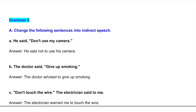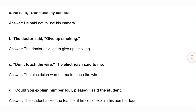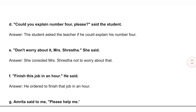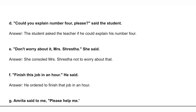Grammar: Change the following sentences into indirect speech. A: He said, 'Don't use my camera.' Answer: He said not to use his camera. B: The doctor said, 'Give up smoking.' Answer: The doctor advised to give up smoking. C: 'Don't touch the wire,' the electrician said to me. Answer: The electrician warned me not to touch the wire. D: 'Could you explain number four please?' said the student. Answer: The student asked the teacher if he could explain number four.